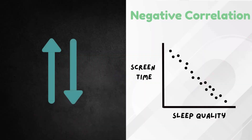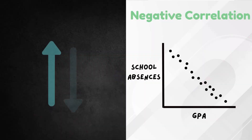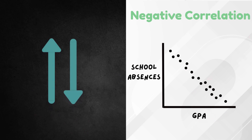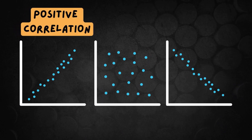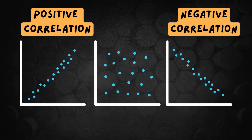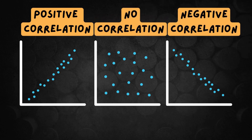The more screen time you have, the lower your sleep quality tends to be. The more school absences you have, the lower your GPA tends to be. You'll usually see these relationships in a scatterplot, a graph where each dot represents a person or data point. A tight upward slope? That's a positive correlation. A downward slope? Negative correlation. A cloud of dots that look like a toddler sneezed on the screen? Probably no correlation.